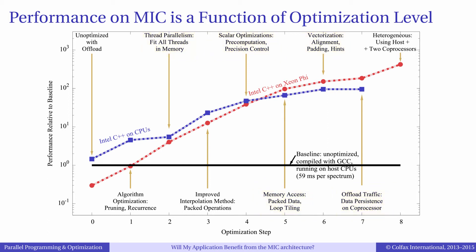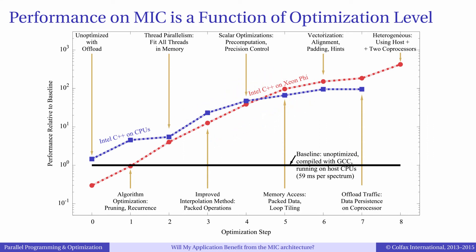Those optimizations will be discussed throughout this course, and they include exposing task and data parallelism, optimizing the mathematics in each vector lane, improving memory traffic, and controlling communication. The important takeaway from this graph is that at each step, performance on Xeon Phi coprocessor and on Xeon processor both improve. Thus, although the focus of this video course is on the Intel Xeon Phi coprocessor, the optimization techniques presented are also applicable for Xeon processors. By training to program better on Xeon Phi coprocessors, you will also be trained for programming on multi-core general-purpose CPUs, including Xeon processors, and on future many-core architectures such as Knights Landing.